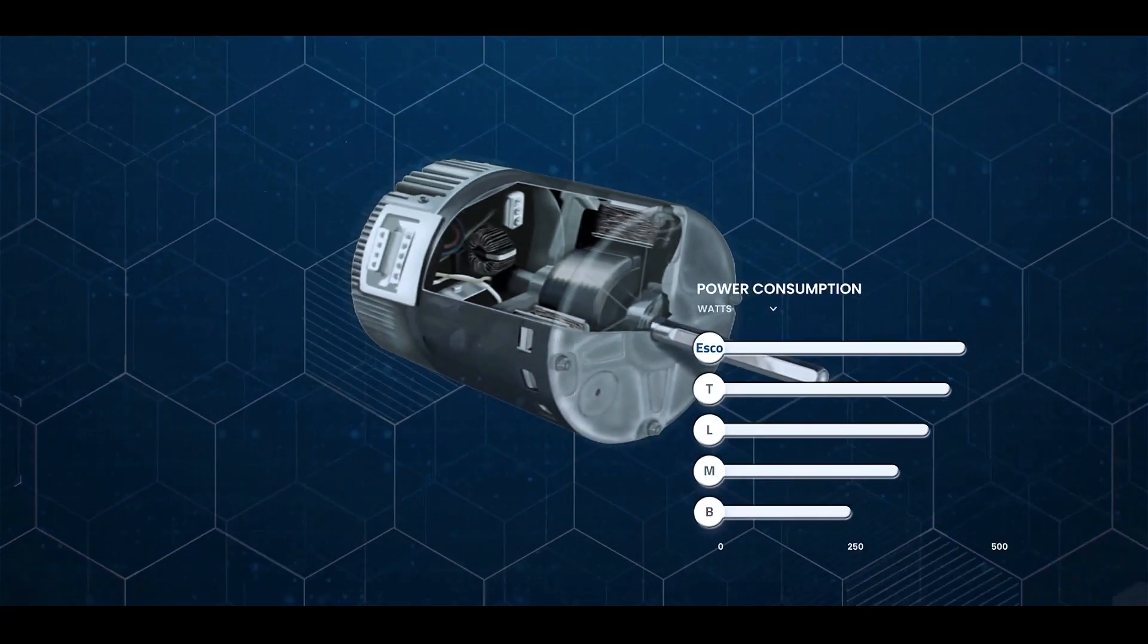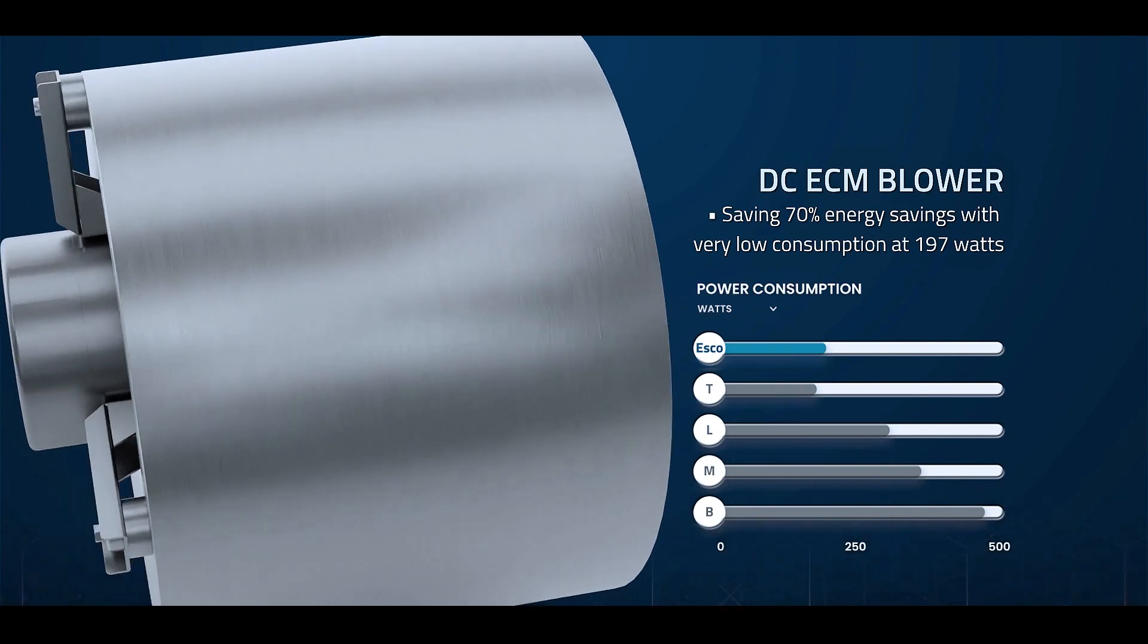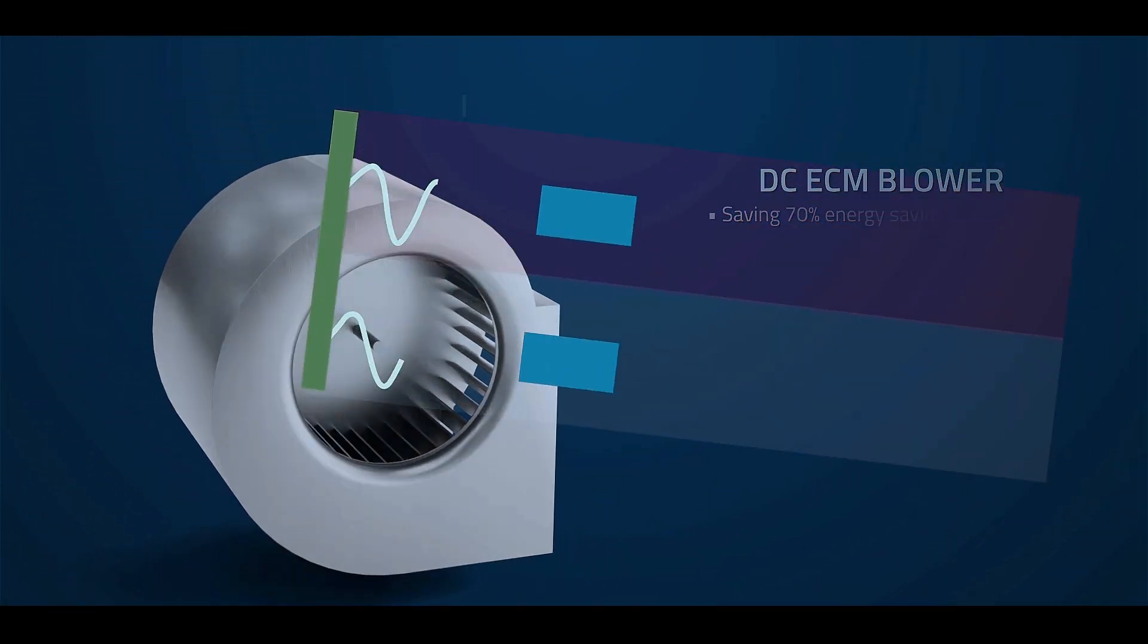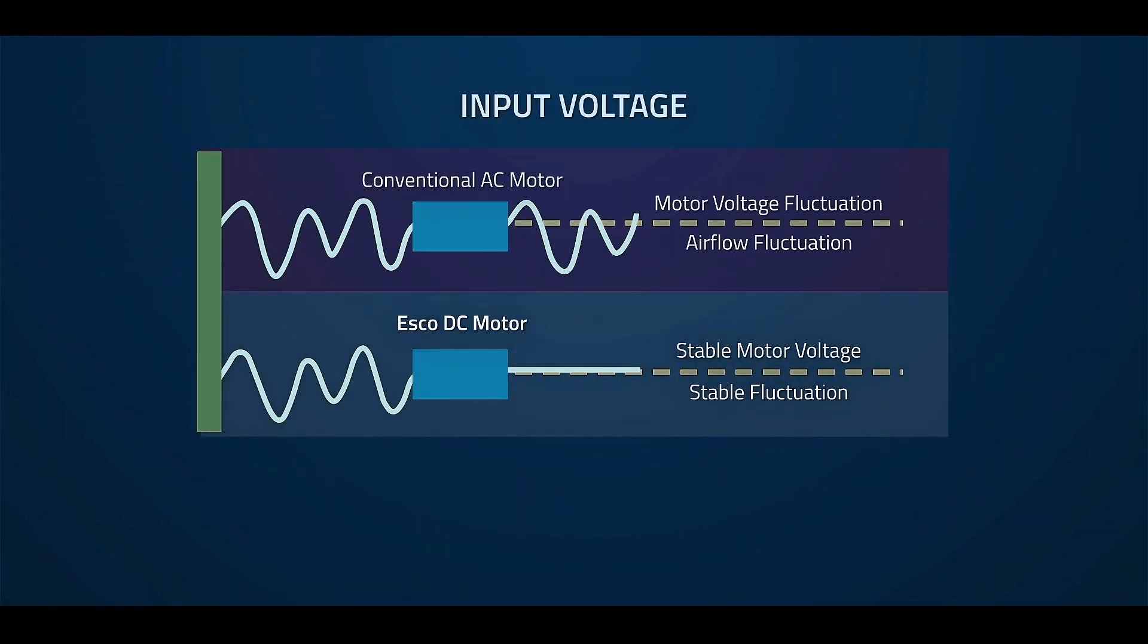DC ECM blower allows 70% energy savings with very low consumption at 197 watts, with auto compensation feature that secures steady airflow.